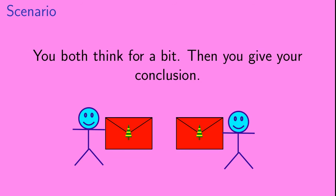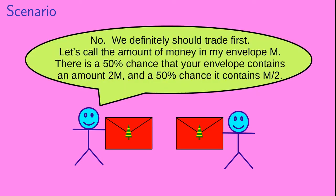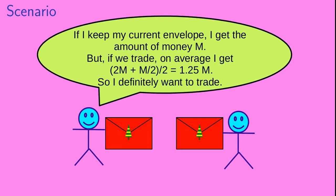You both think for a bit, then you give your conclusion. You say: each envelope is equally likely to have the larger sum of money, so there is no advantage or disadvantage for either of us to trading before we open our envelopes. But your sibling disagrees. Your sibling says: No, we definitely should trade first. Let's call the amount of money in my envelope m. There is a 50% chance that your envelope contains an amount 2m and a 50% chance it contains m over 2. If I keep my current envelope I get m. But if we trade, on average I get (2m + m/2) / 2, which equals 1.25m. So I definitely want to trade.